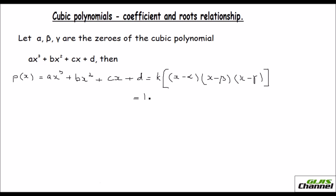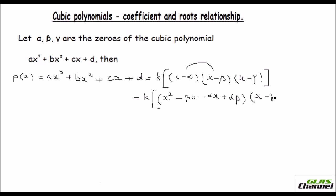So let us solve for this to find the relationship between them. I keep k out and I am going to multiply the first two factors. What happens? It would be x squared — foil it. First terms first, then the outer terms: minus beta x, then the inner terms: minus alpha x, and then the last term: plus alpha beta, because minus alpha and minus beta makes it positive. And then you have the third factor remaining.